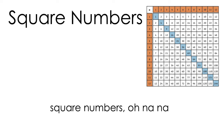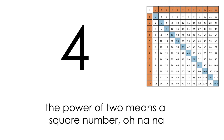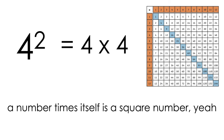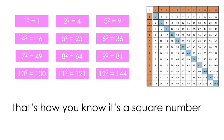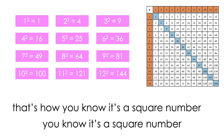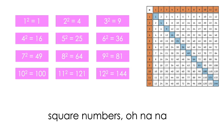Square numbers, ooh na na. The power of two means a square number, ooh na na. A number times itself is a square number, yeah. That's how you know it's a square number, you know it's a square number. Square numbers,